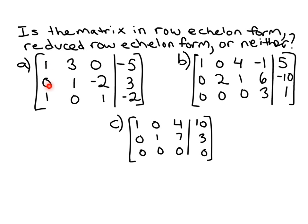Now you don't necessarily have to go down exactly one and over exactly one, but they must move down and to the right in general. So this first matrix is not in row echelon form and definitely not reduced row echelon form. I'm going to label example A here neither.